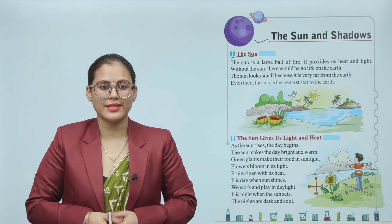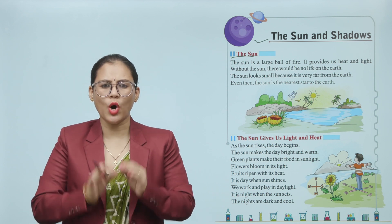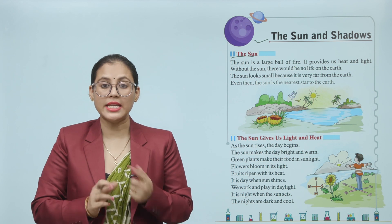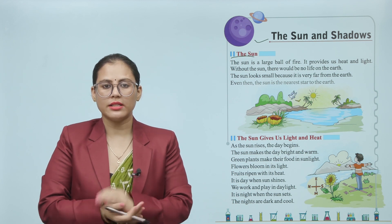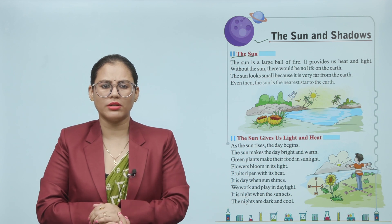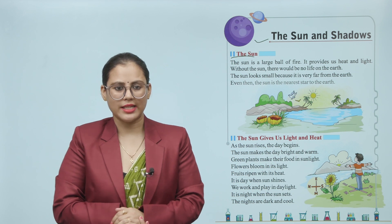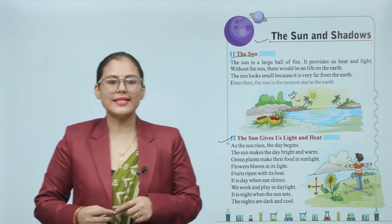The Sun looks small because it is very far from the earth. Even then, the Sun is the nearest star to the earth.